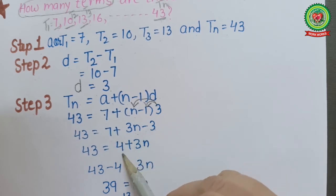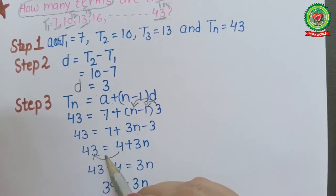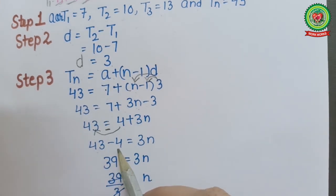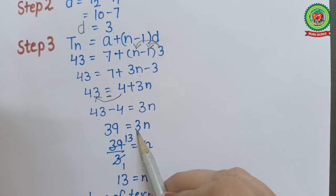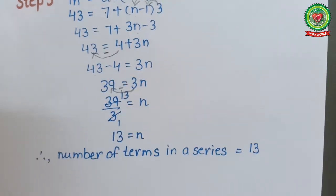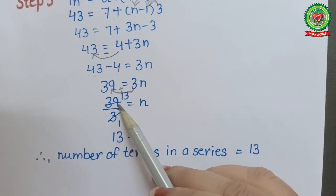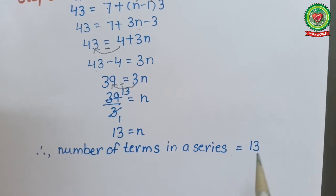We will collect the numbers: 7 - 3 = 4 plus 3n. Now we will shift the 4 to the left side; it will change sign. 43 - 4 = 3n, which gives 39 = 3n. Now 3 will divide: when 3 divides 39, we get 13. Therefore, the number of terms in the series is 13.